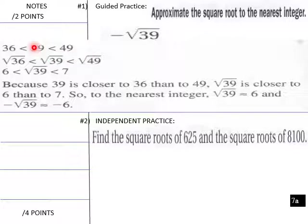So √36 < √39 < √49. 6 < √39 < 7, because 39 is closer to 36 than 49. The square root of 39 is closer to 6 than to 7. So the nearest integer, the square root of 39 would be 6, and the negative of square root of 39 would equal negative 6. So it would be closest to negative 6. It would be your closest integer to the negative square root of 39.